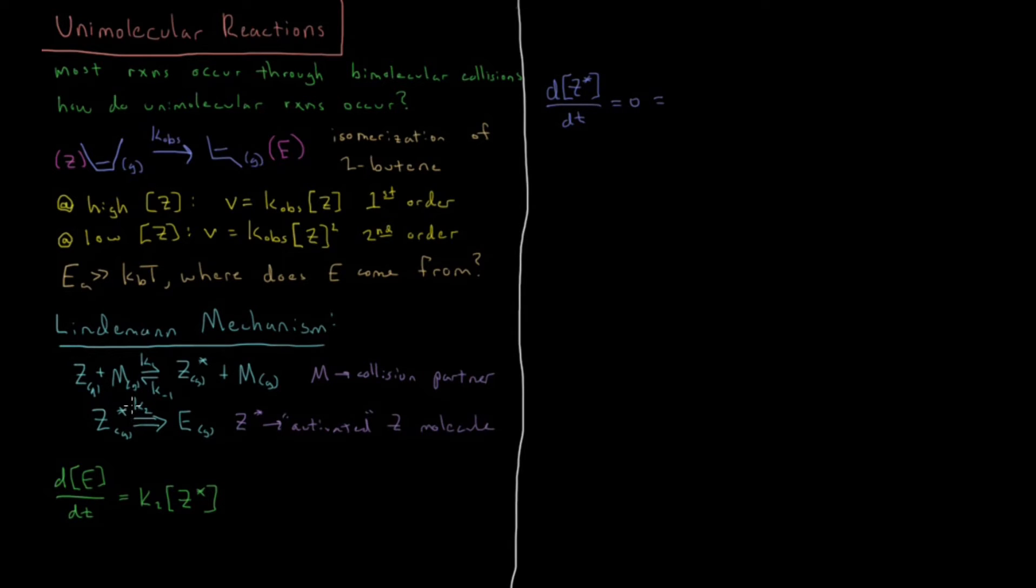If we invoke steady state approximation, that says that d[Z*]/dt equals zero. Our intermediate is at a constant low concentration throughout the reaction. That will equal all the ways we can form and consume it. It can get formed from K1 from the forward reaction, and that rate law would be K1 times Z times M. It can be consumed by the backward reaction, which would be K-1 times Z star times M. And it can also be consumed by K2 by the forward second reaction, which would be K2 times Z star.